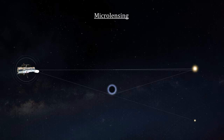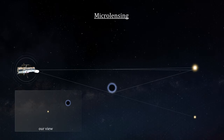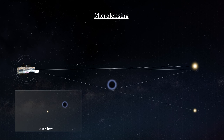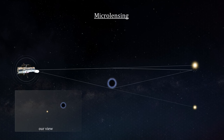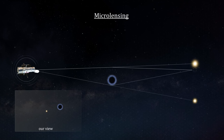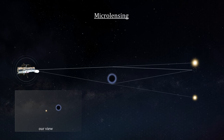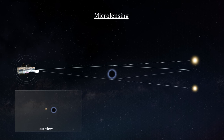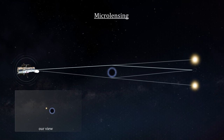The greater the mass density of the microlens, the larger the lensing impact. This opens up the possibility of finding a free-roaming black hole by detecting its microlensing effects.